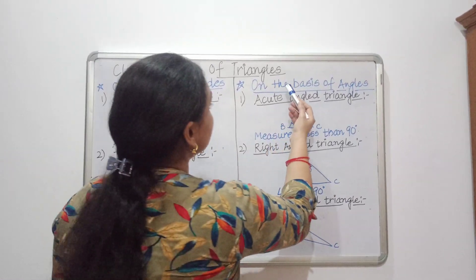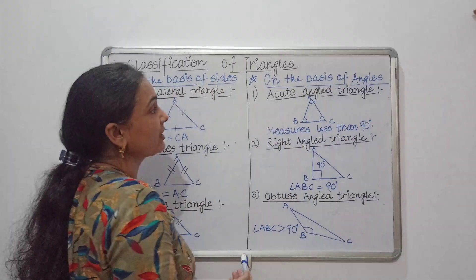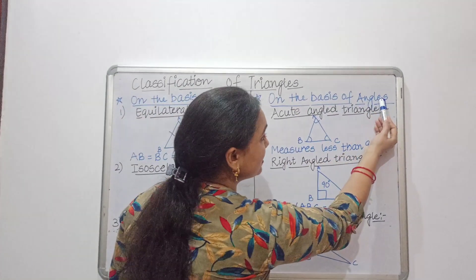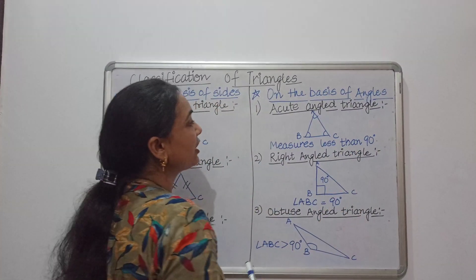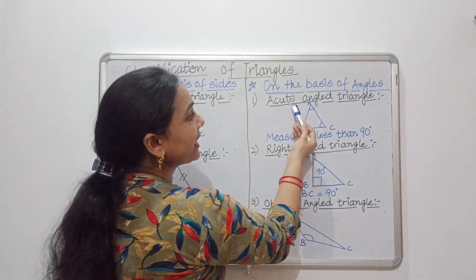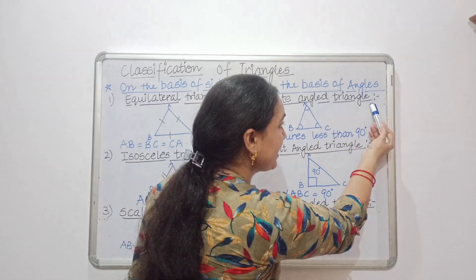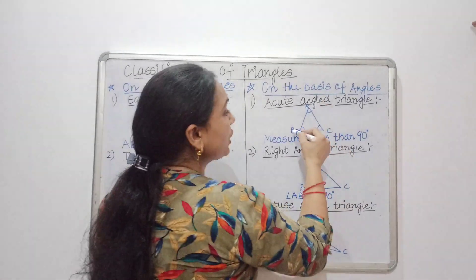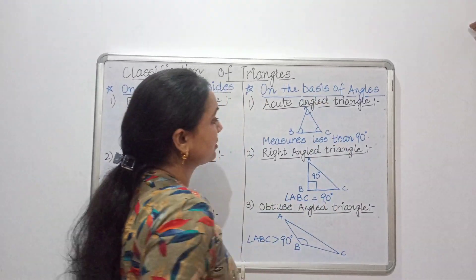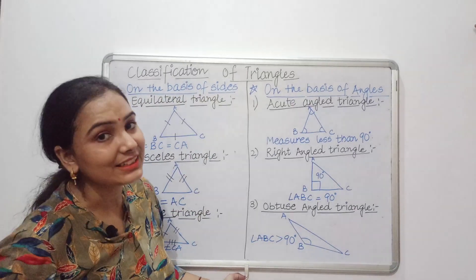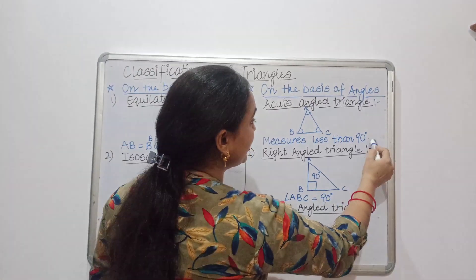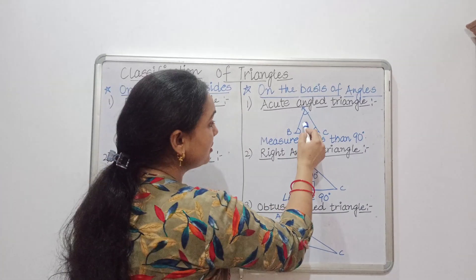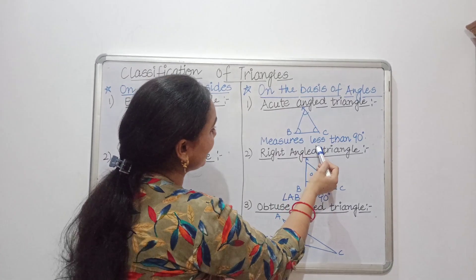Now comes the second type of triangles — triangles on the basis of angles. The first one is the acute angled triangle. In the acute angled triangle, all the angles measure less than 90 degrees.